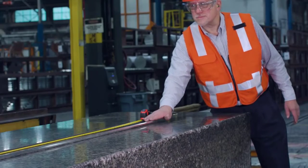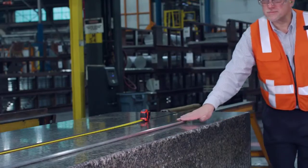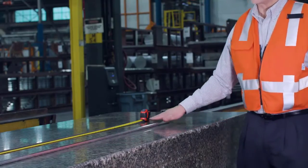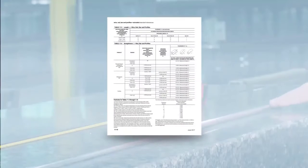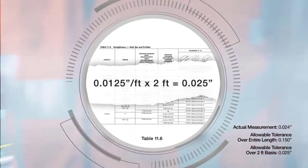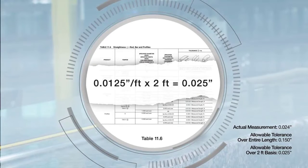In this case, the bow happens to be closer to one end of the length, so a shorter span will be used to verify straightness. We find the gap is present over a two foot distance. To determine the maximum allowable straightness tolerance, multiply twelve and a half thousandths per foot by two foot to get twenty-five thousandths of an inch.